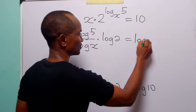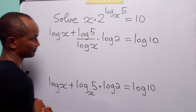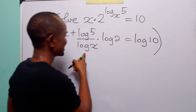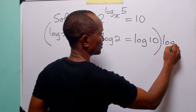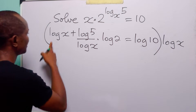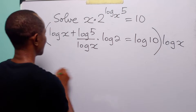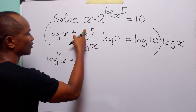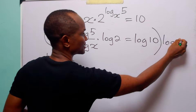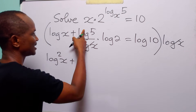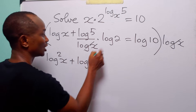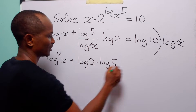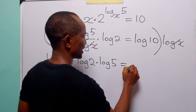And this is still equal to log 10. To get rid of this fraction, we are going to multiply through the equation by the denominator, that is log x. Log x times log x gives log squared x; log 5 over log x times log x cancels, leaving us with log 2 times log 5. And this is equal to log 10 times log x.